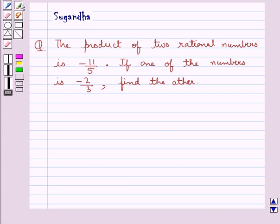Hello and welcome to the session. In this session we discuss the following question which says, the product of two rational numbers is minus 11 upon 5.